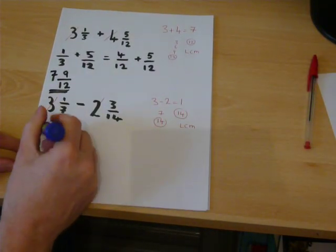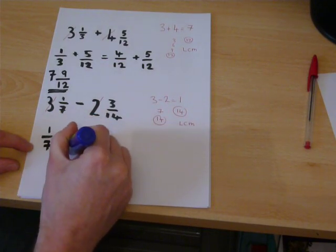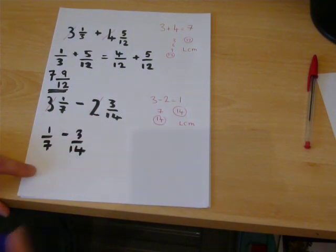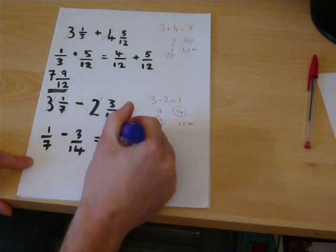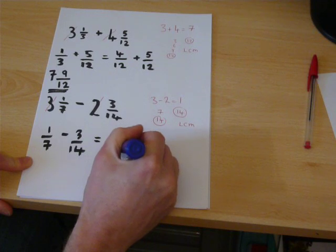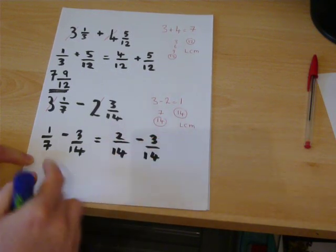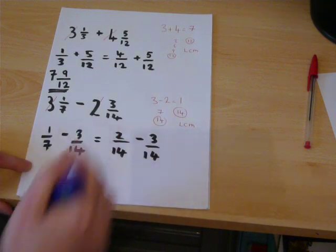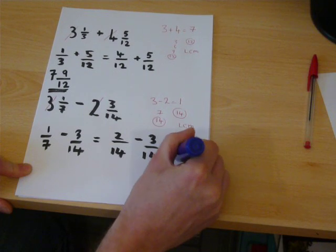So 1 seventh take away 3 fourteenths. 14 is the lowest common multiple. So that is 2 fourteenths minus 3 fourteenths. Since that fraction there has been doubled, 2 take away 3 is minus 1 over 14.